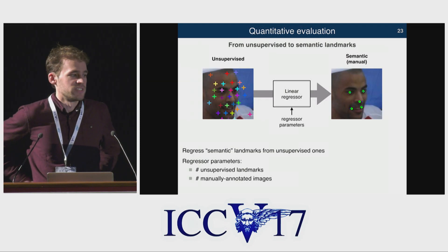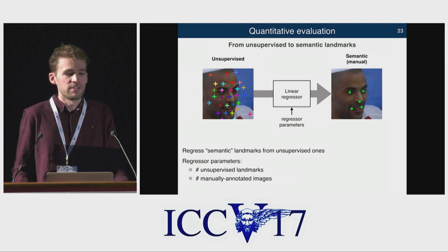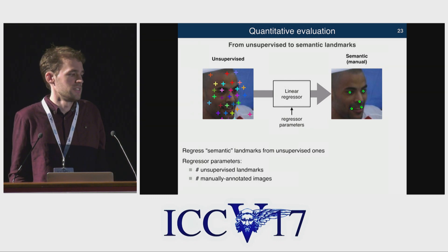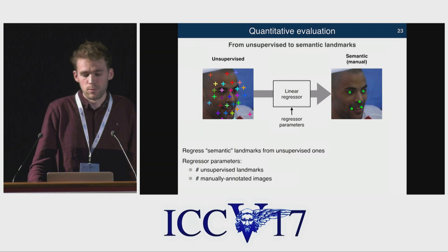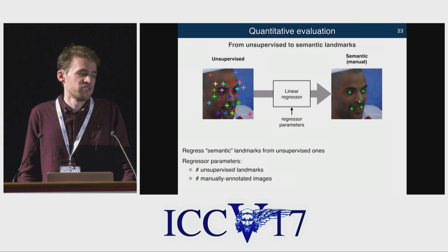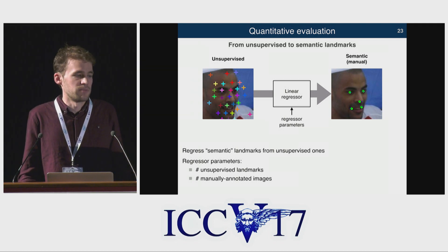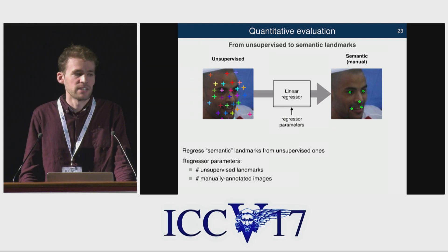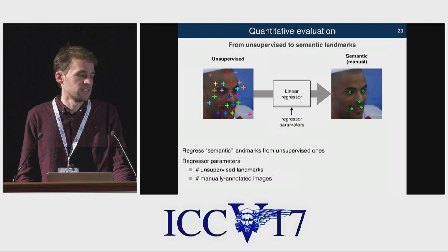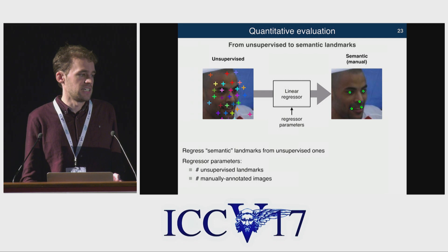Those were qualitative results, but we also want to see quantitative performance. Because our landmarks are automatically discovered, it's not immediately possible to assign a number to how well it's doing. What we can do is train a very simple model on top of our output coordinates — a linear regressor from a set of our landmarks to some landmarks annotated by a human. There are two things we can vary: the number of unsupervised landmarks we predict, and the number of images used to perform this regression. Ideally, if most of the information about where things are on the face is in our landmarks, it shouldn't take much training to predict the annotated ones.